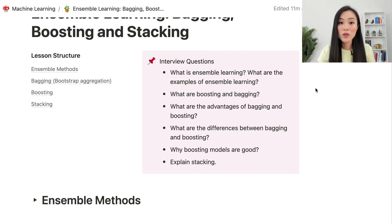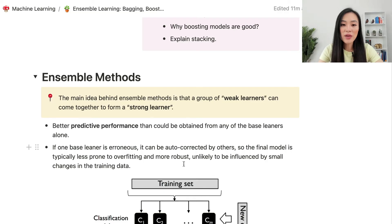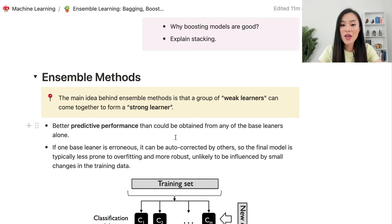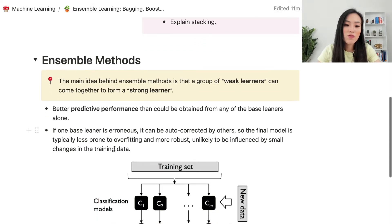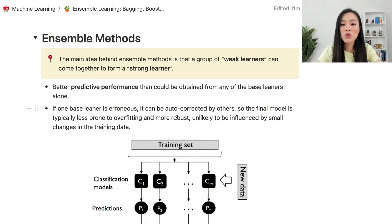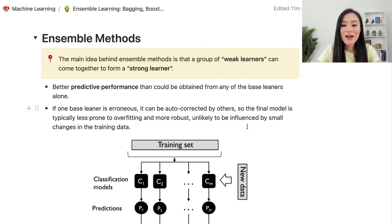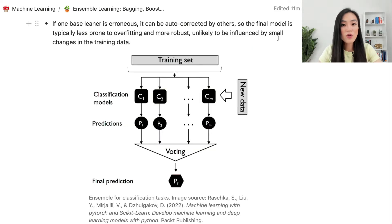The idea behind ensemble methods is pretty simple: a group of weak learners can come together to form a strong learner, and the strong learner will have better predictive performance than any of the base learners alone. If one base learner is erroneous, it can be auto-corrected by others, so the final model is typically less prone to overfitting and more robust — unlikely to be influenced by small changes in the training data.